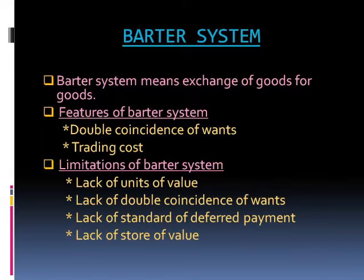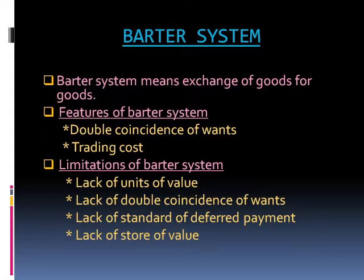Barter means exchange of goods for goods. An economy where there is barter of goods and services is called a C-C economy, that is, a commodity-for-commodity exchange economy. Features of the barter system: First, double coincidence of wants — barter can be practiced only if there is simultaneous fulfillment of mutual wants of both buyer and seller. Second, trading cost — the cost of exchanging in trade, including search costs and disutility of waiting.